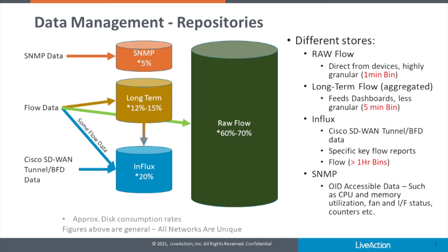The long-term flow store takes the same incoming flow data, but aggregates it into larger bins. Typically, each data point or bin in the long-term flow store sums five bins from the raw flow store. As the bins cover a longer period of time, there are fewer of them, and this makes it the obvious choice to use when running reports or creating dashboards where you want to cover a lot of ground. Starting searches that cover wide time ranges is ideal for the long-term flow store, as a much smaller amount of data will be involved. Once you have identified the points in time you want to drill down into, you can easily move to more detailed reports using smaller bins in the raw flow store.